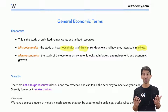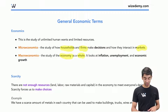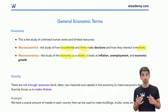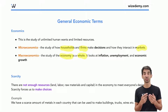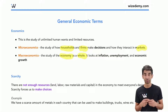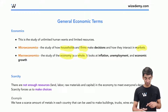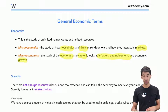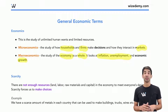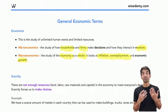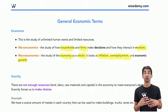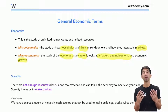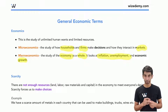Macroeconomics, on the other hand, looks at the economy as a whole — all the shoes, clothes, cars, cell phones, everything being produced in the economy. It also looks at inflation, unemployment, and economic growth. So that's looking at all of the inflation in the economy, all of the growth of everything, not just one specific market.